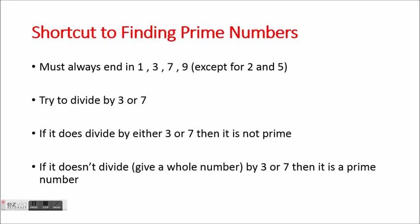There's a shortcut to finding if a number is prime. Every prime number apart from 2 and 5 will end in 1, 3, 7, or 9. Once you've confirmed that, try dividing by 3 and by 7. If you get a whole number when dividing by either, it's not prime. For example, 19 ends in 9, and 19 divided by 3 or 7 doesn't give a whole number, so 19 is prime. But 25 ends in 5, not 1, 3, 7, or 9, so it's not a prime number.